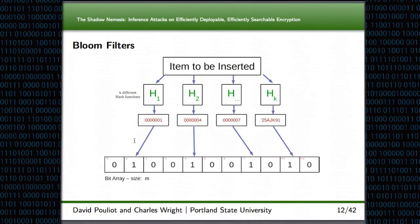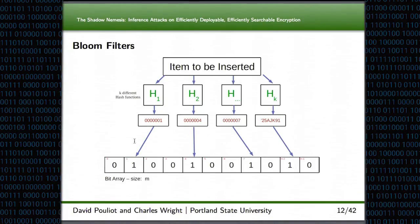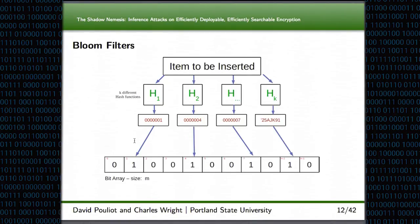Before we get into the Mimesys construction, we need a little background on bloom filters. A bloom filter is a data structure designed to be space efficient while also allowing fast lookup and insertion. To insert something inside of a bloom filter, you simply take the item to be inserted and compute k different hashes of it. The output of all those hash functions is used as an index to a bit array, and you simply set the bits at all those indexes to one. Search is very similar — you take the item you'd like to search for, perform the same number of hashes, but instead of setting the bits to one, you simply check that they're set to one.